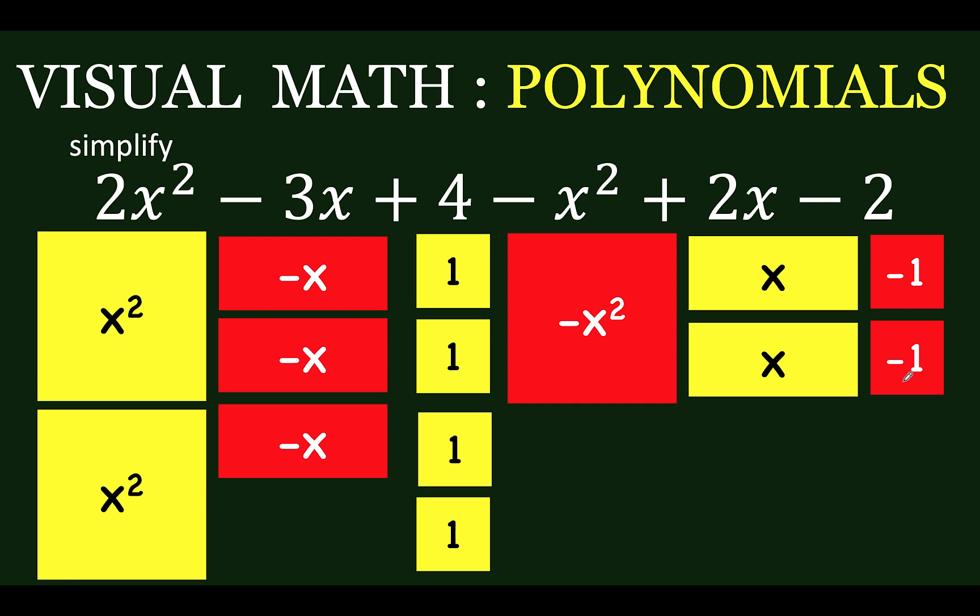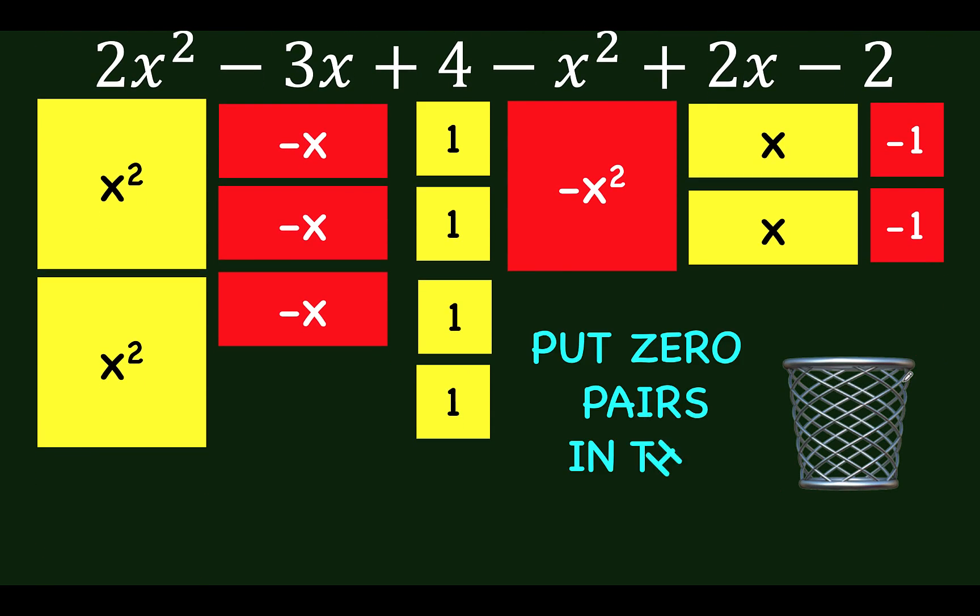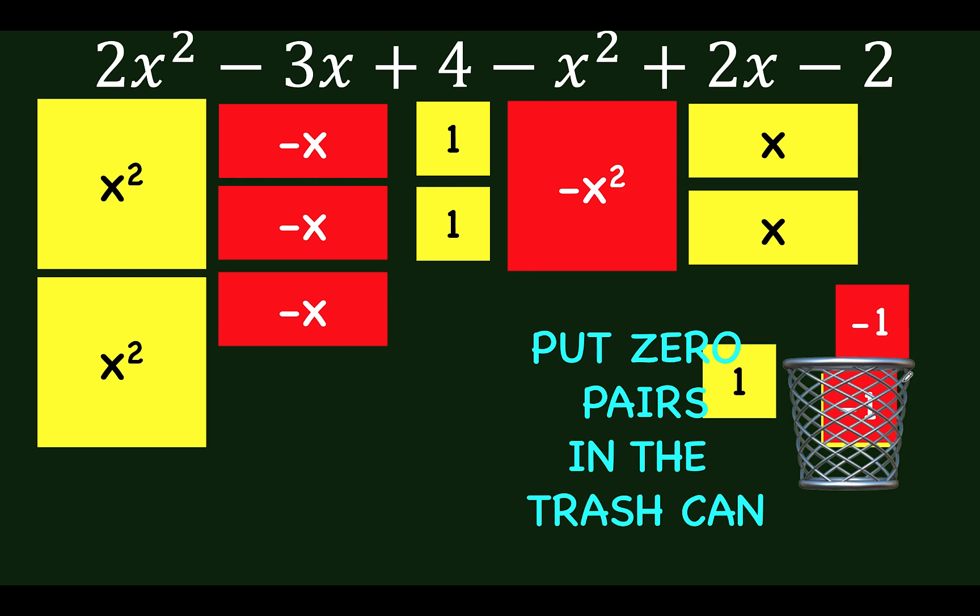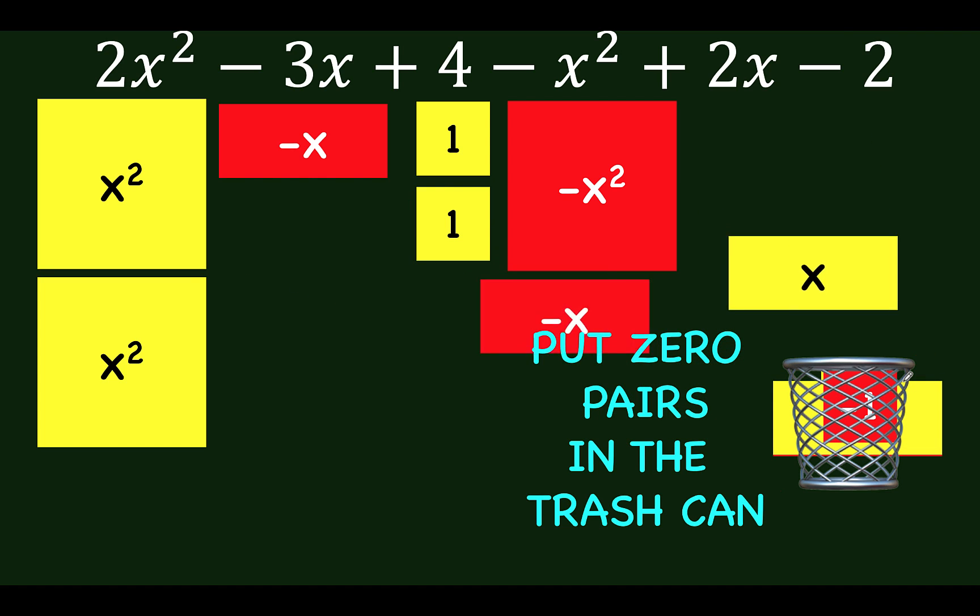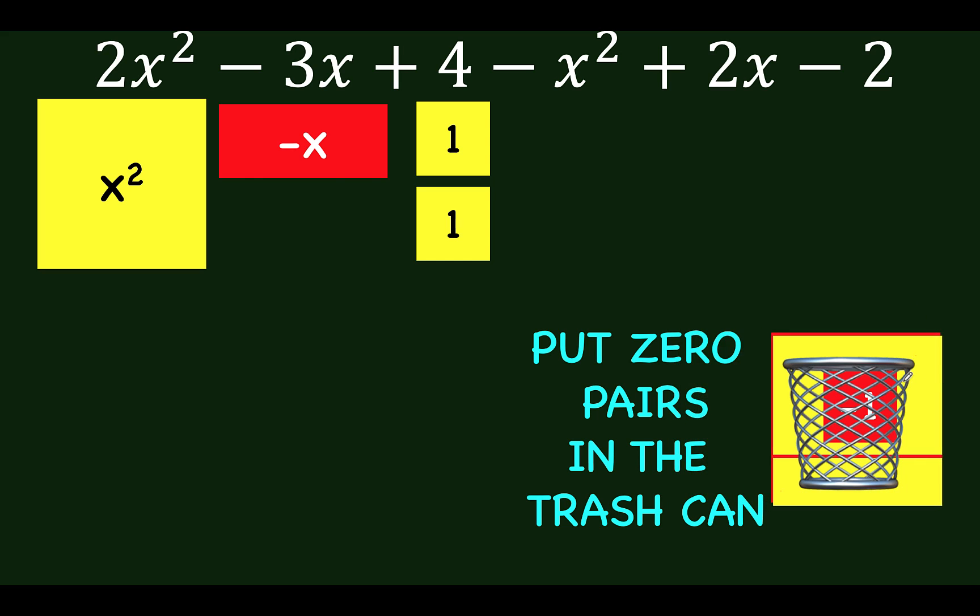Once represented, our task is to remove all the zero pairs. So let's get our trash can. Put all the zero pairs in the trash can. Their values would be zero. So remove all the zero pairs, and there is one more pair here. Then throw them away.